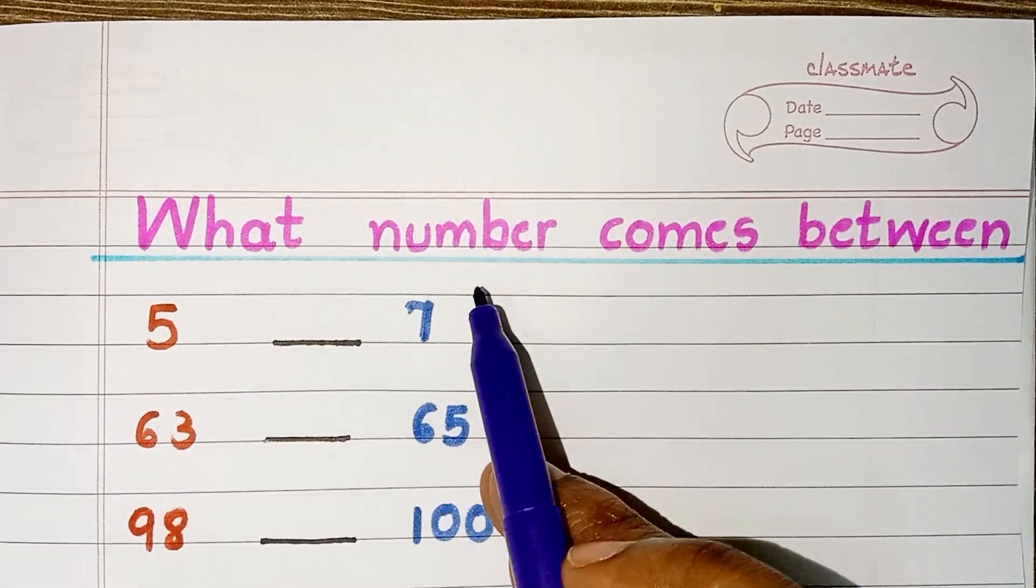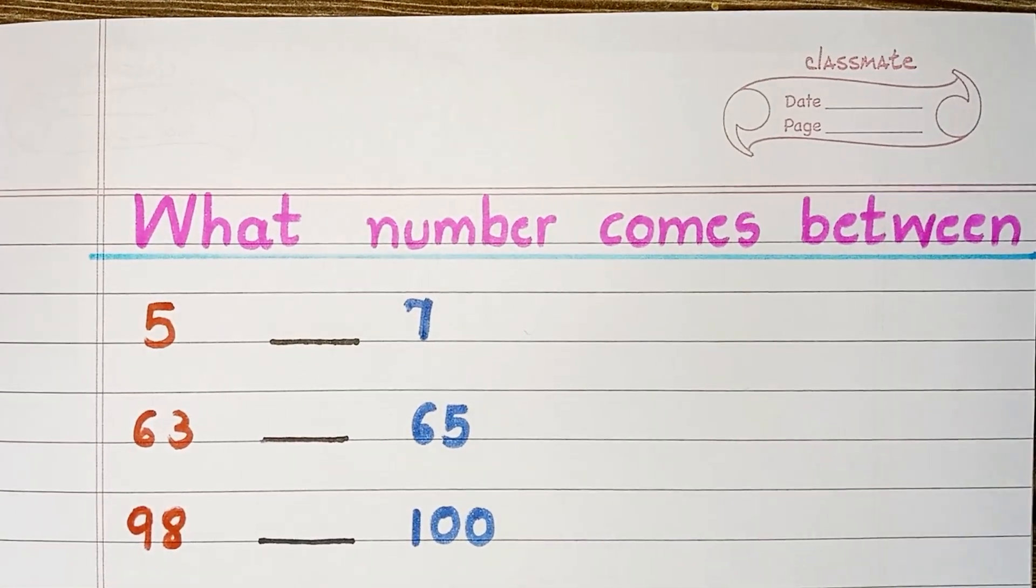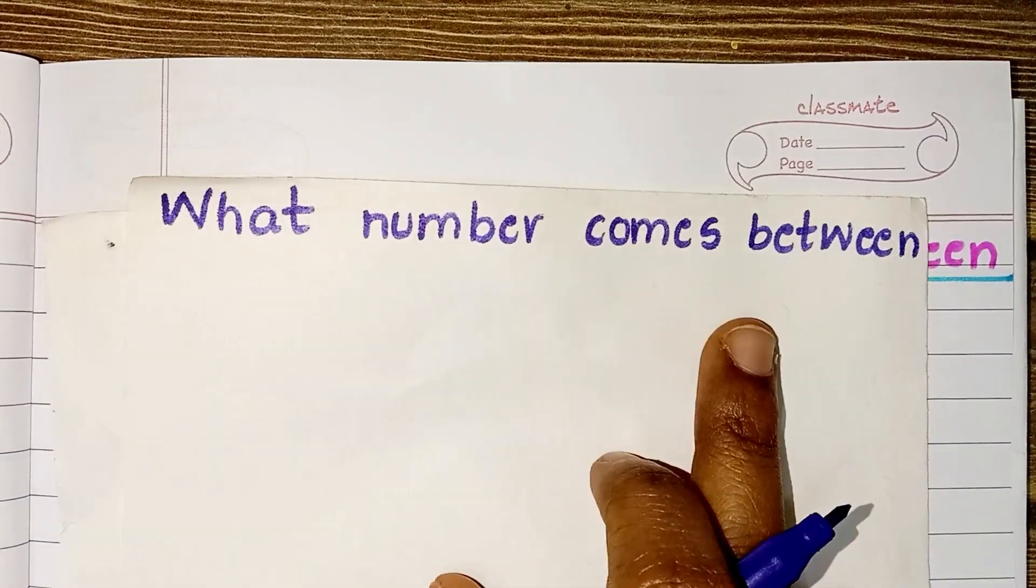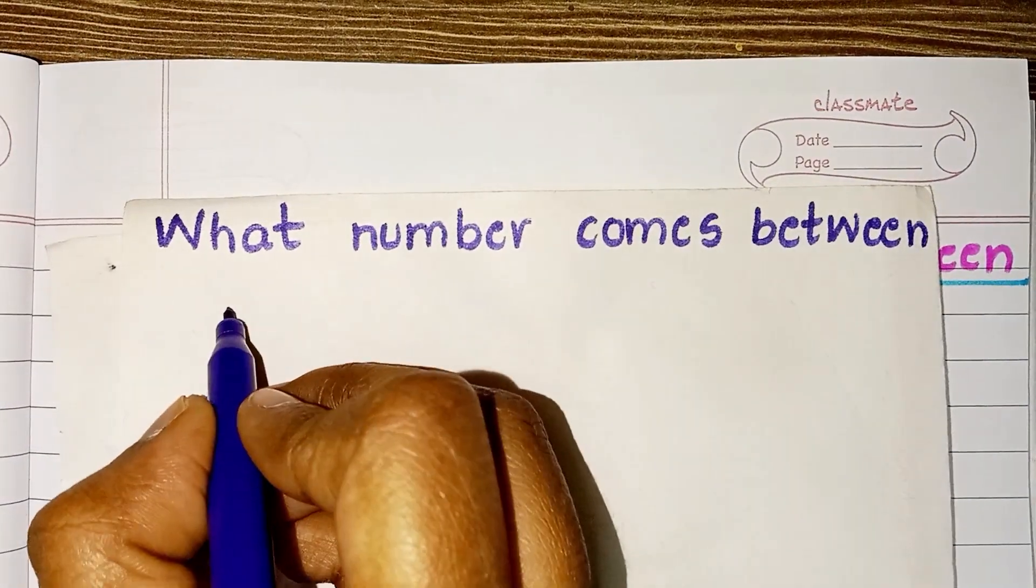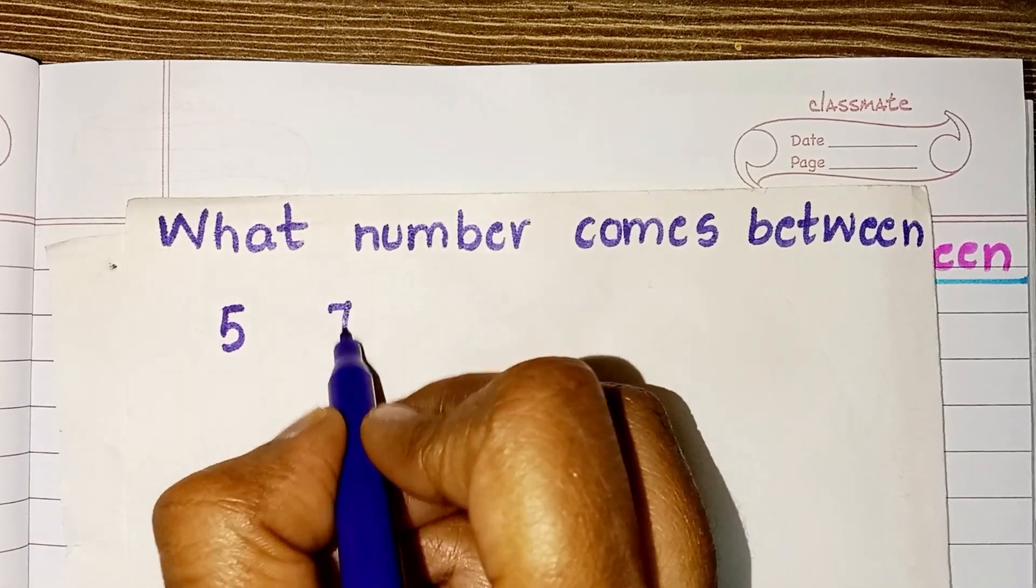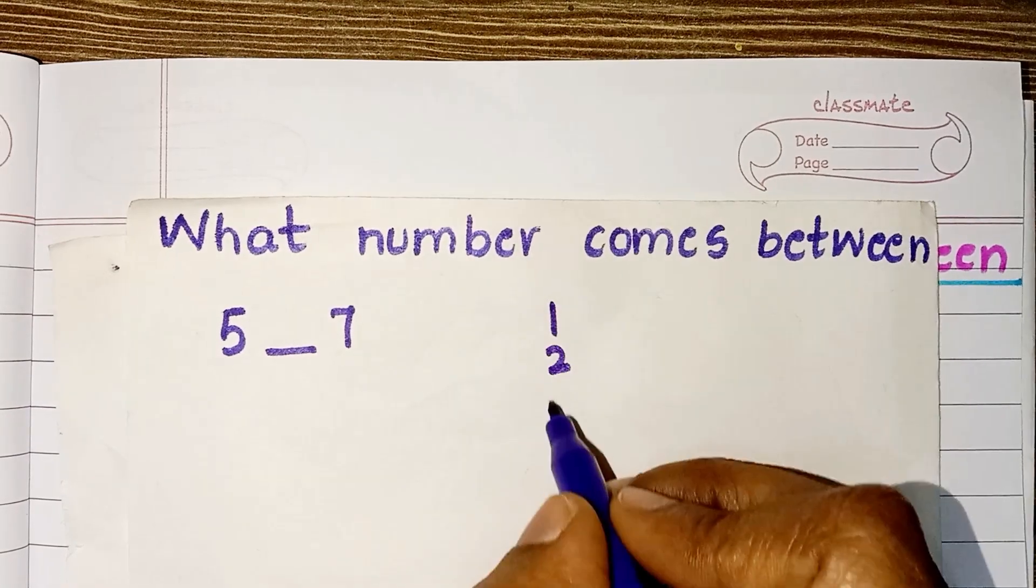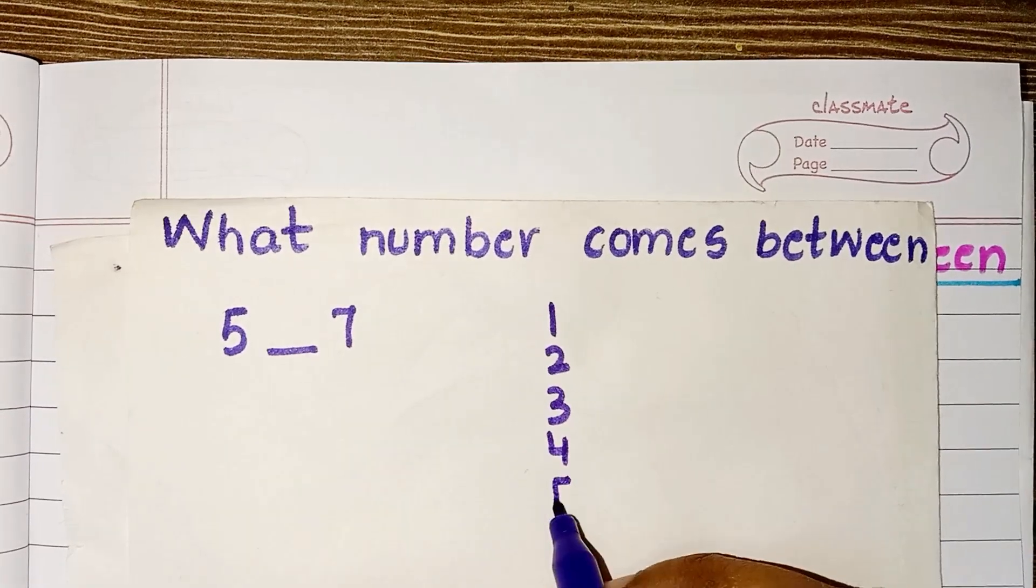What number comes between 5 and 7? 1, 2, 3, 4, 5.